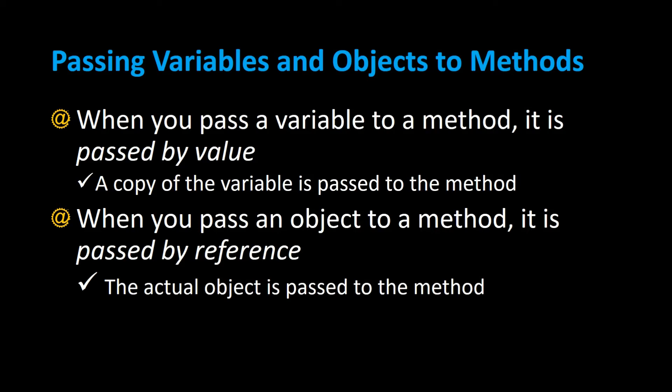Passing variables and objects to methods. When you pass a variable to a method it's passed by value, meaning a copy of the variable is passed to the method. However, when you pass an object to a method it's passed by reference, meaning the actual object is passed to the method. Let's see what the difference is through an example.